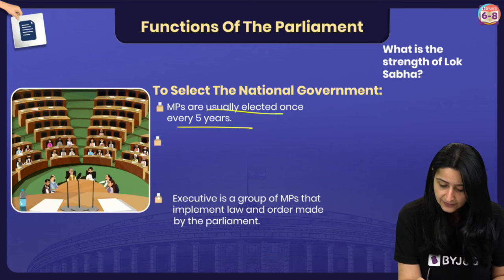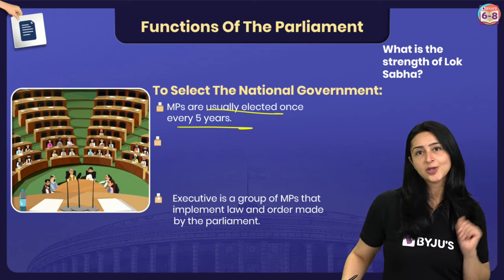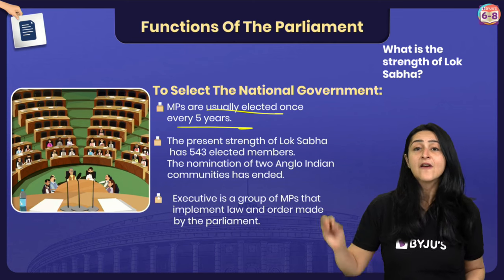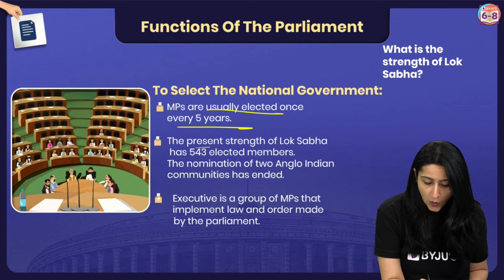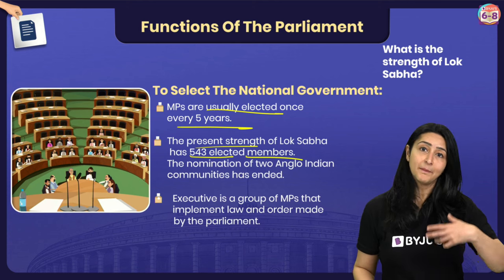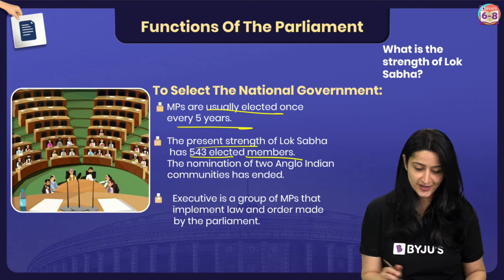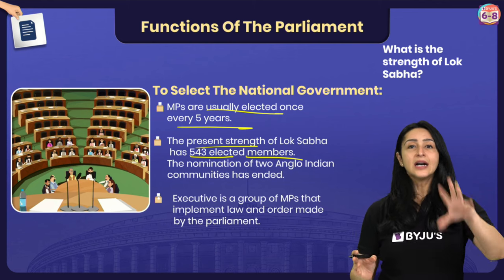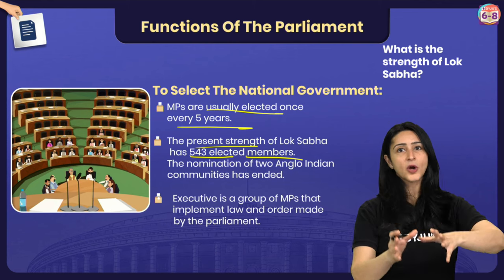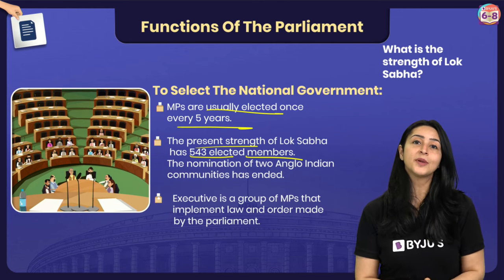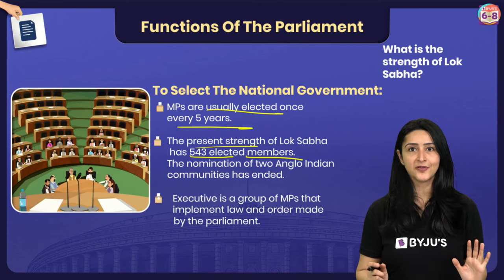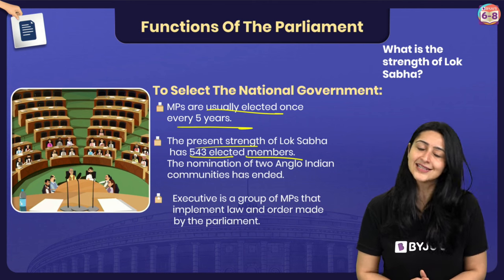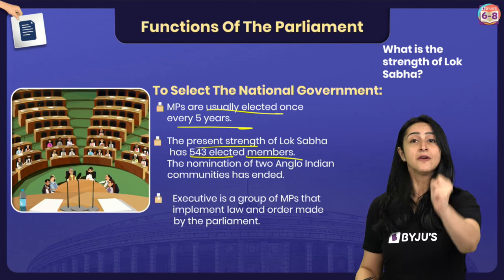The total strength of the Lok Sabha is 543 members elected by the people through general elections. Earlier, there were 545 seats — 543 elected by us and 2 nominated from the Anglo-Indian community by the President of India. However, the provision for nomination of Anglo-Indians is no longer in use. So now we have 543 members.